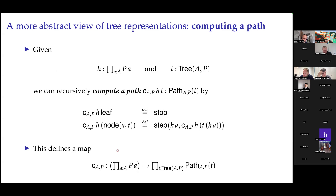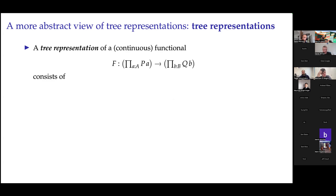Putting this together, the C-map goes from dependent products to a path-forming operation: given a tree, it carves out the path based on the argument. Using trees, paths, and this C-map, we can cast tree representations in a slightly more abstract way. We also generalize the forms of functionals considered — not just nat-to-nat, but general dependent products in the domains and co-domains — which allows a compositional story and a category of representable functionals.